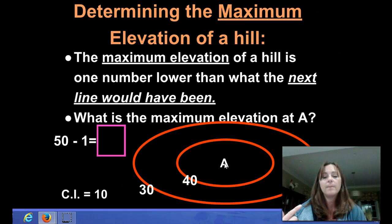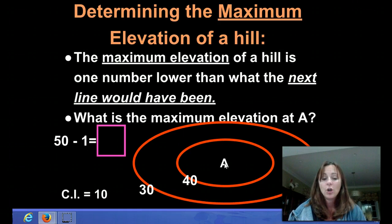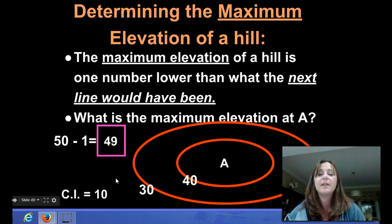We also know that the contour interval is 10. So we think to ourselves, well, what would the next line up be? It would be 50, but it's not written in. So we haven't gotten to 50 yet. So our maximum elevation of hill A would be one less than 50 or 49. So the possible maximum elevation at A in this instance would be 49.